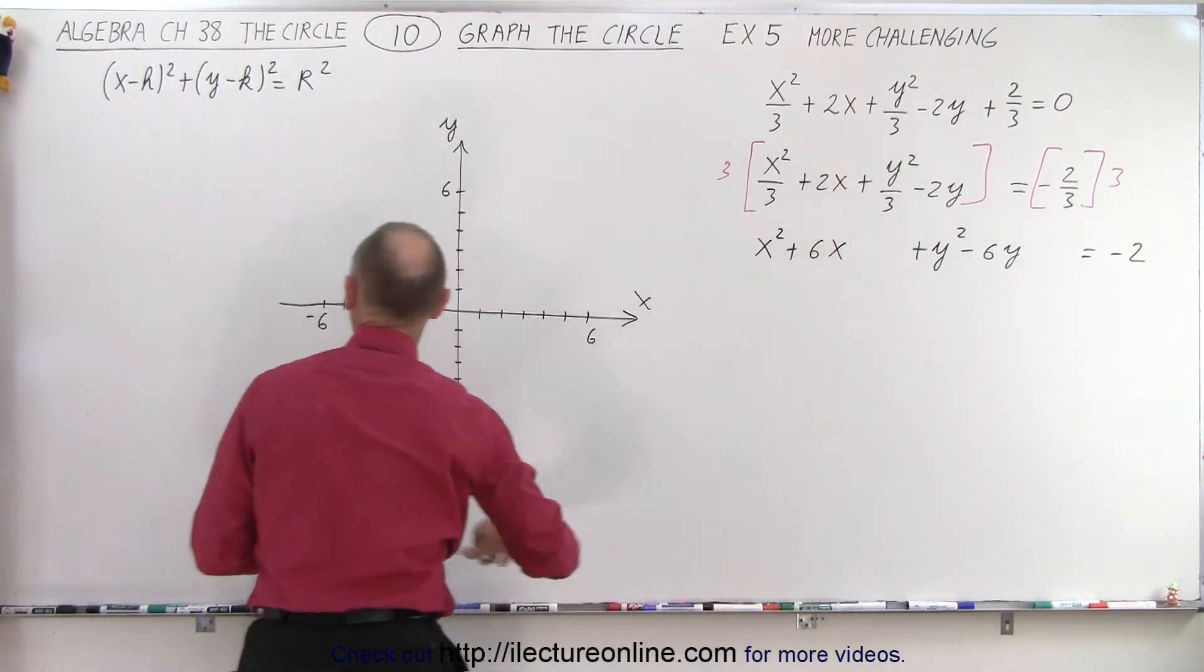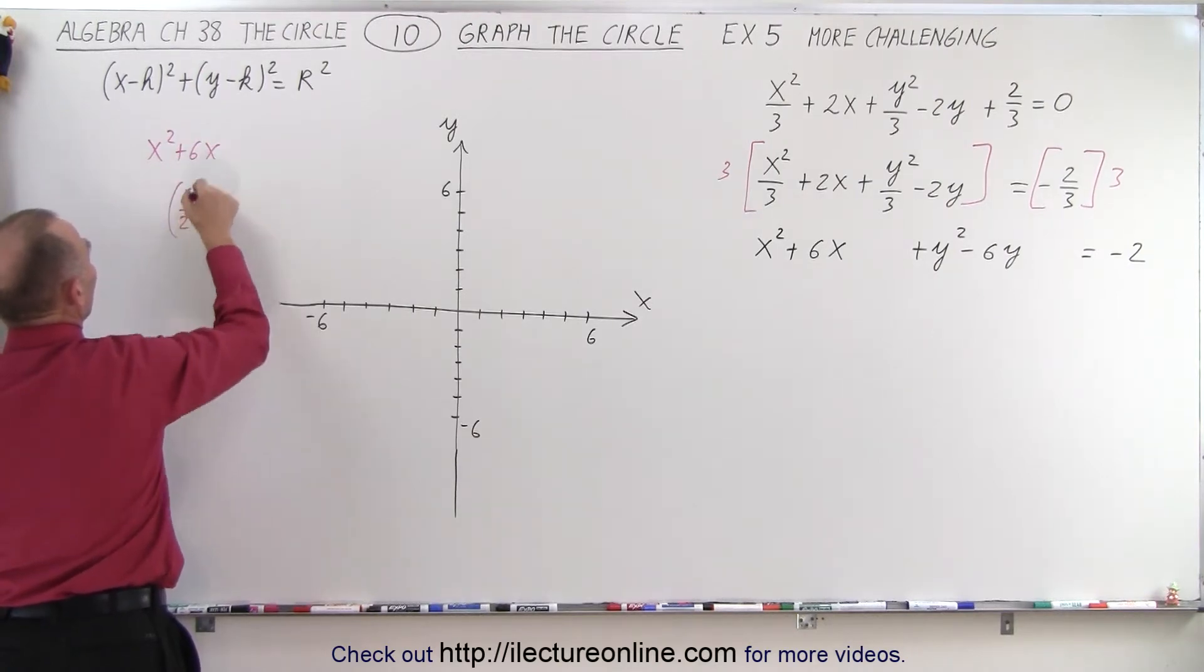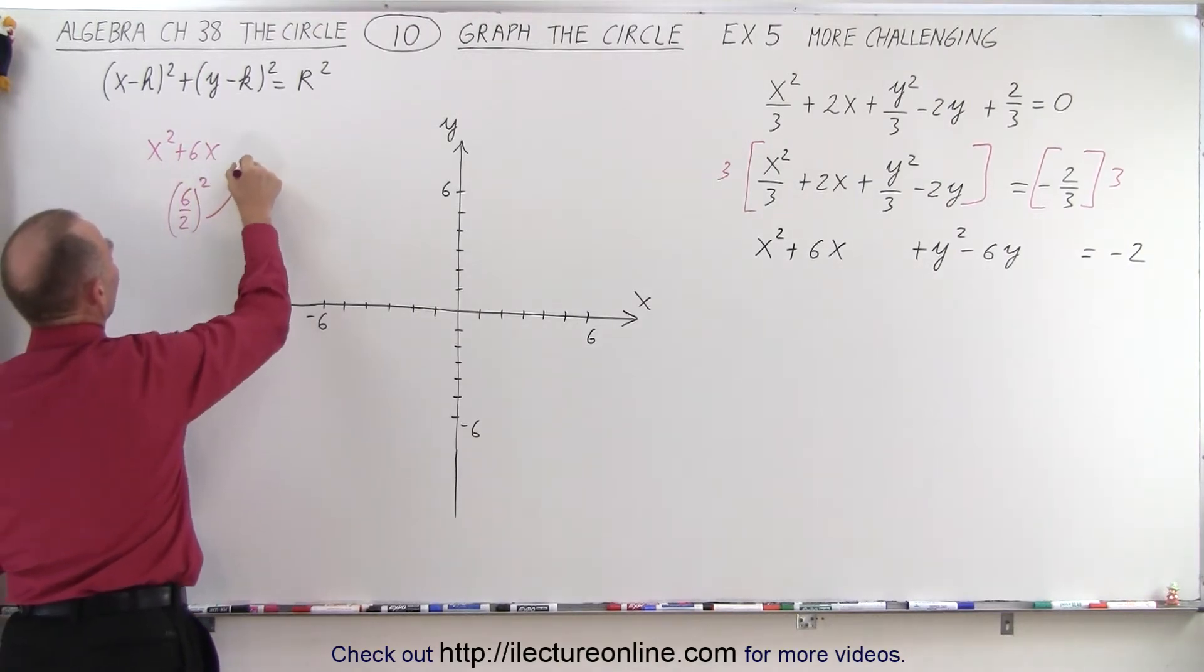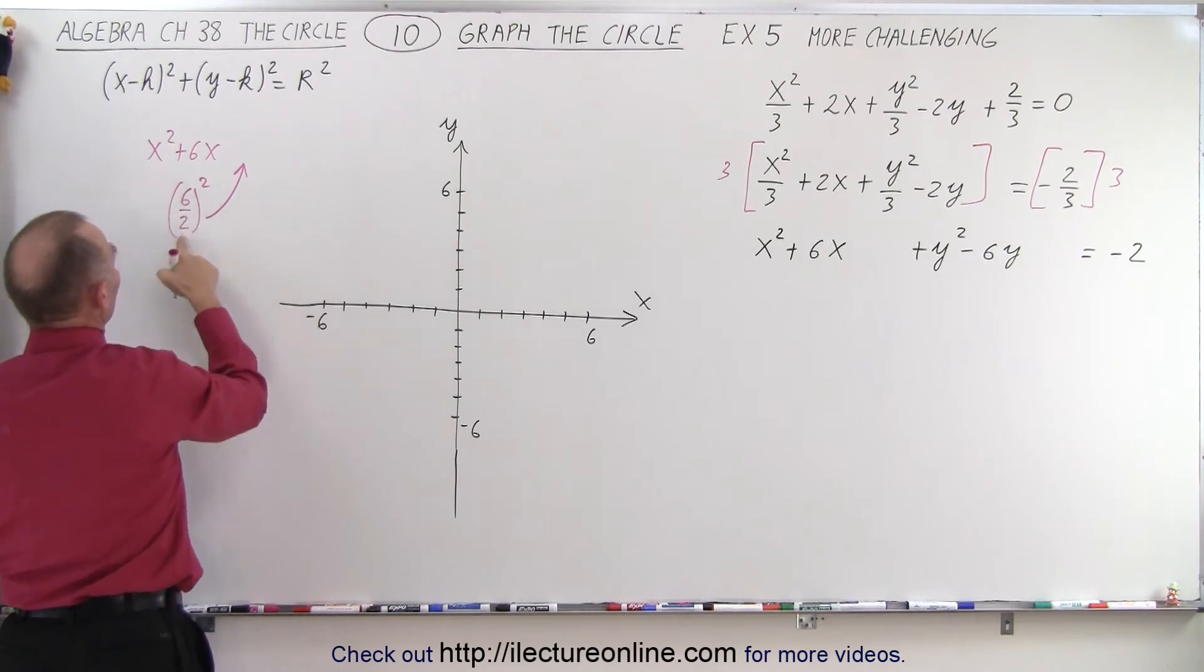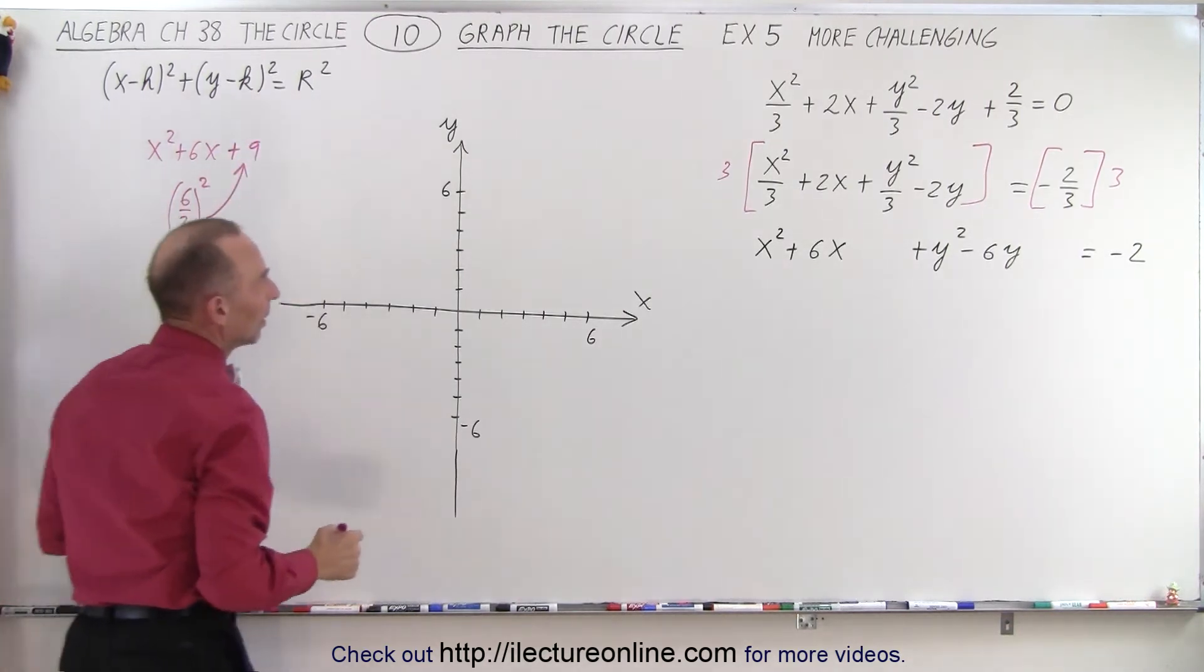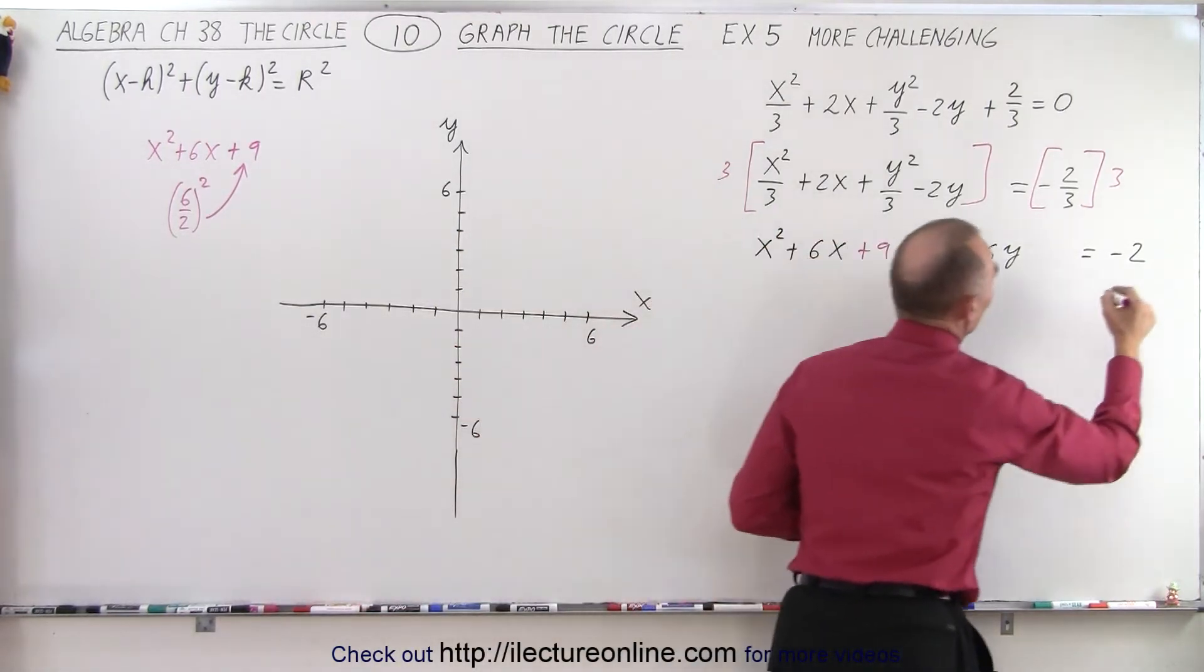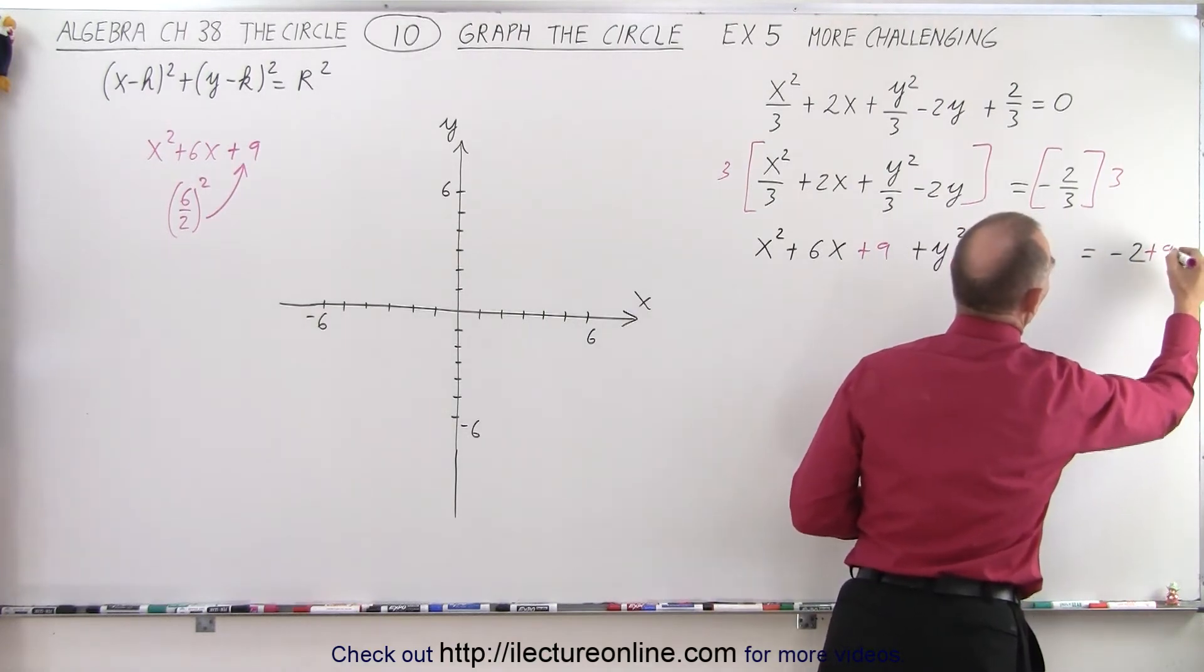So again, let's do that over here. We have x squared plus 6x. We take half of this, so 6 divided by 2, and we square it, and then we add it to this side. So 6 divided by 2 is 3, square it, we get 9, so we need to add 9 to that. The same over here, add 9 to this to make this into a perfect square. But if we add 9 to the left side, we're going to have to add 9 to the right side.